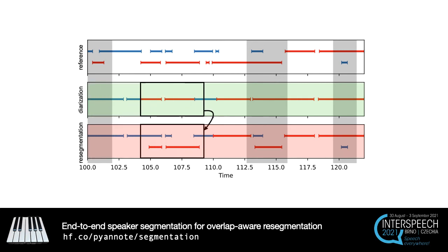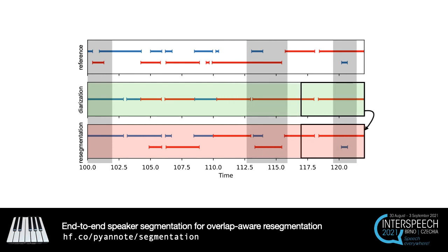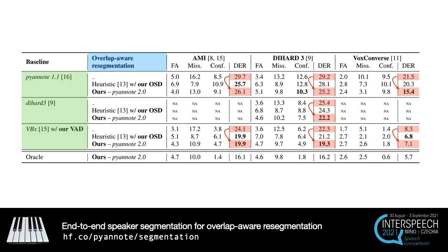For each position of the sliding window, we find the optimal mapping between speakers of the original diarization and the local speaker diarization provided by the model, and locally replace the former by the permutation of the latter. We applied this resegmentation approach on three different diarization baselines and three datasets, and found that it consistently brings a significant improvement in terms of diarization error rate in every considered combination.